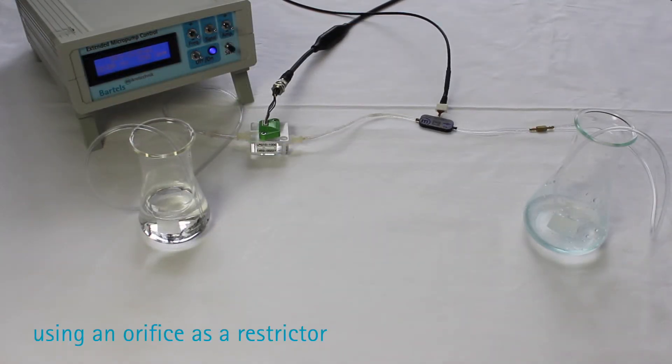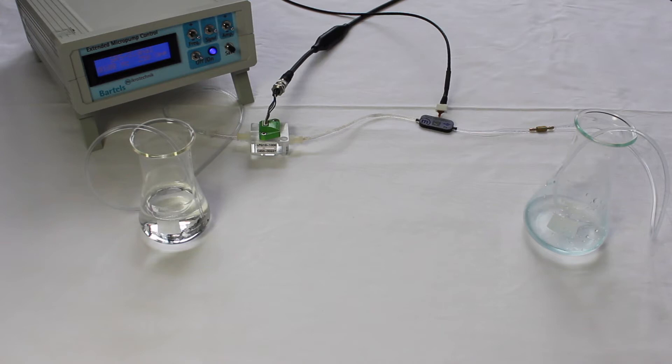It is crucial to select the right restrictor, one that will fit the needs for your application. One way to restrict the flow rate is with an orifice. These come in preset dimensions, diameter and length, and it may not be possible to find an orifice for your specific flow rate.